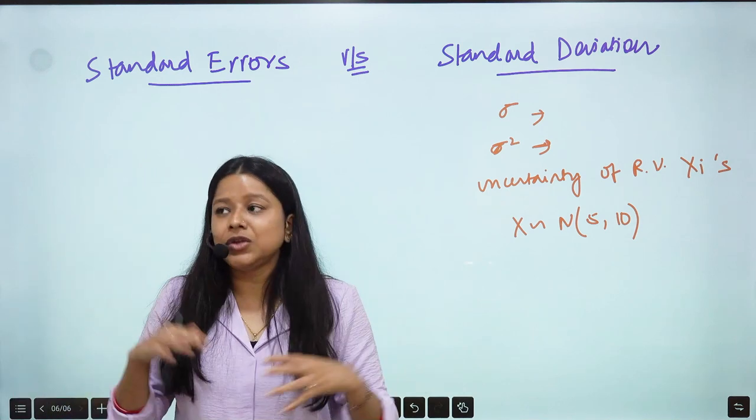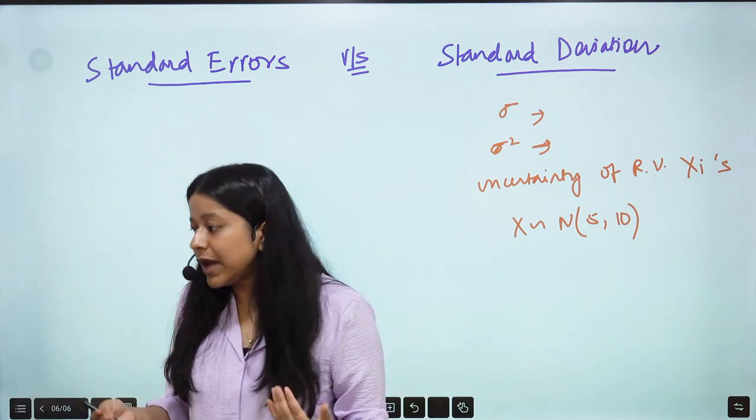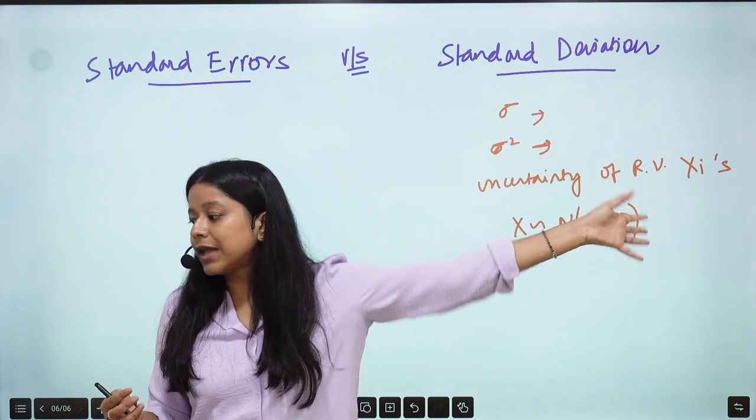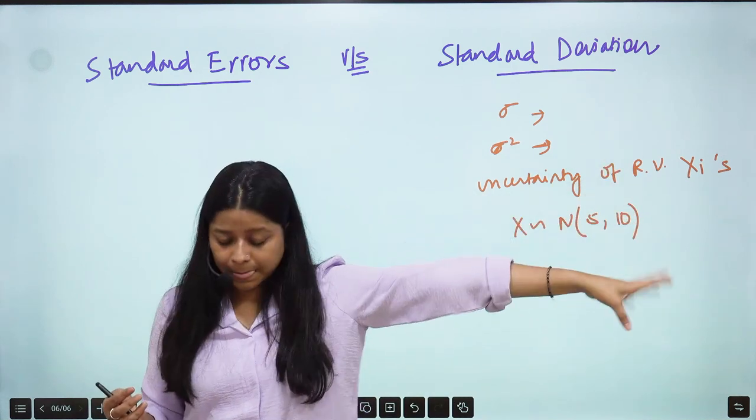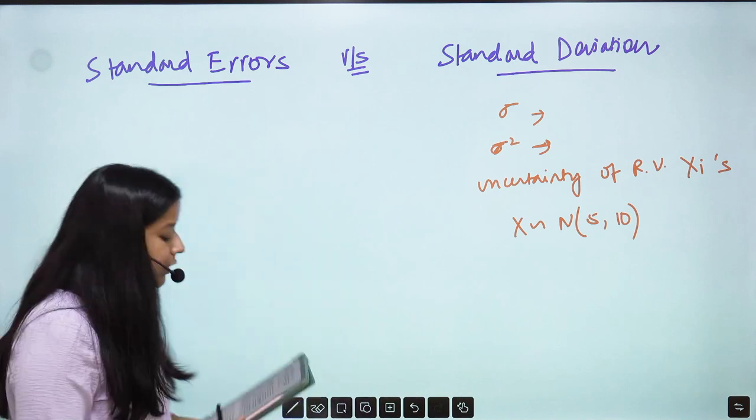Or, when you have for example 100 data points, you are calculating your variance for that. That is your Sigma Square. What is Standard Error?